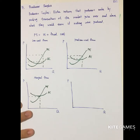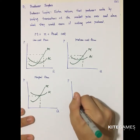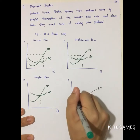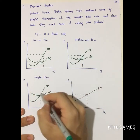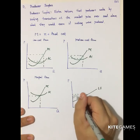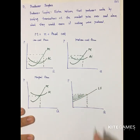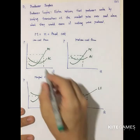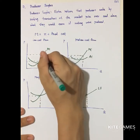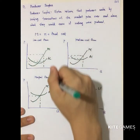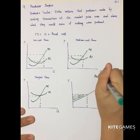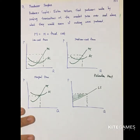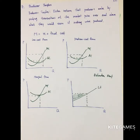The producer surplus here corresponds to the long-run supply curve below the price. Adding up all these profits generates an area we call Ricardian rent. So the producer surplus in the long-run supply curve is the Ricardian rent.